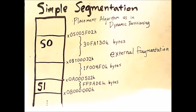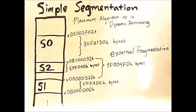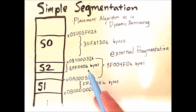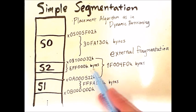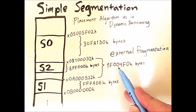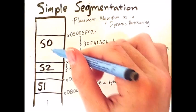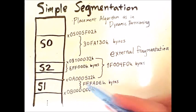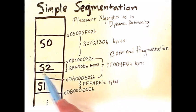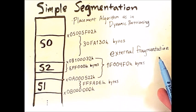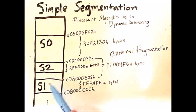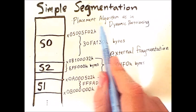Let's see what happens if we add another segment. The new segment S2 has a size of EFF000 bytes (a hex number). This is fewer bytes than the 1F0004F0 bytes between the end of segment 0 and the beginning of segment 1, so this empty space had enough room for S2 to be placed inside of it. Now there's still some empty space left — this is, once again, external fragmentation. The actual placement of S2 would depend on some placement algorithm.